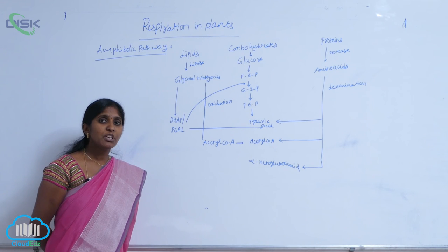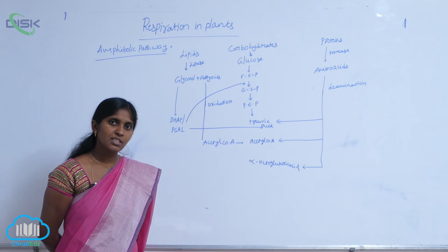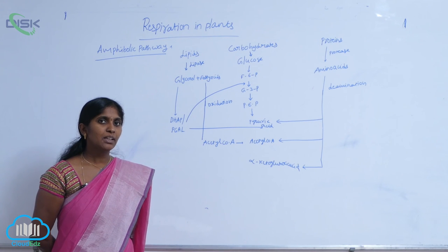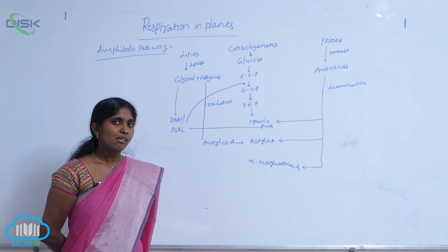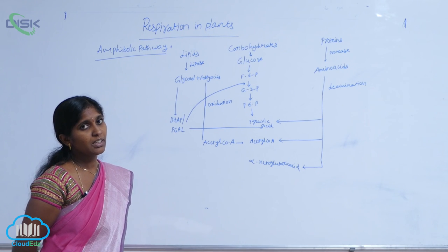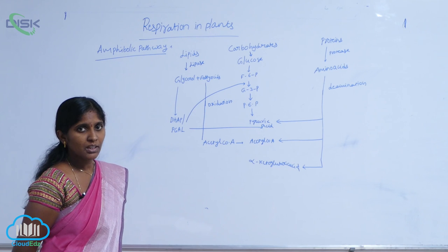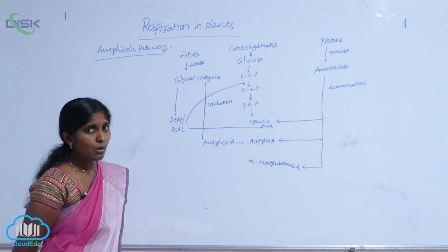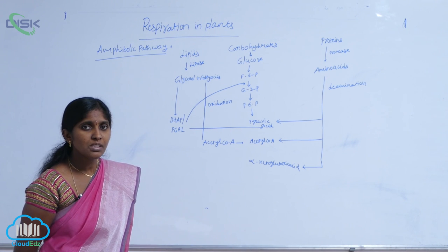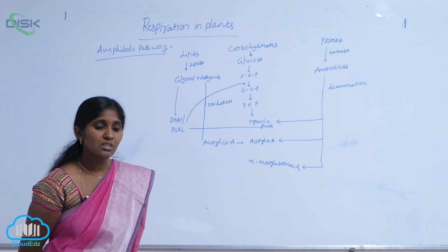Therefore, respiration is called an amphibolic pathway. In older days, respiration was considered only a catabolic pathway. But the new concept is that it is an amphibolic pathway — meaning the intermediates produced during respiration can both follow successive reactions for ATP production (catabolism) and participate in the synthesis of macromolecules like lipids, fatty acids, and proteins (anabolism).